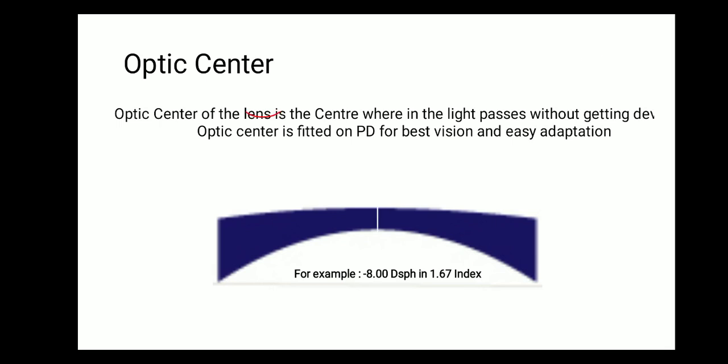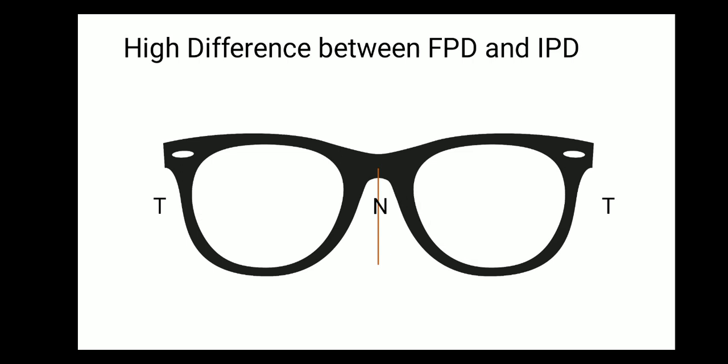For example, the red circle at the exact center of the lens is your optic center. We will use a minus 8 spherical lens at 1.67 index for all the upcoming exercises. We have a fixed frame with a nasal side and a temporal side, and we are going to see how a large difference between frame PD and IPD impacts the thickness of the lens cut and placed inside the frame.